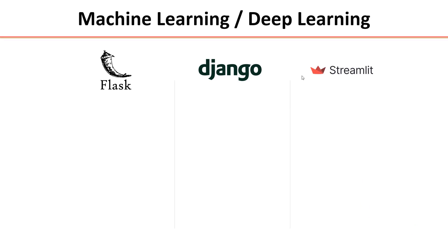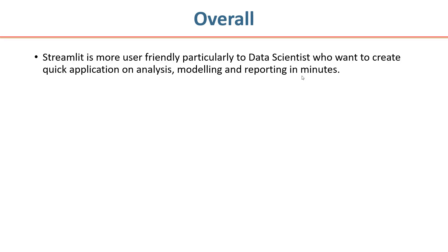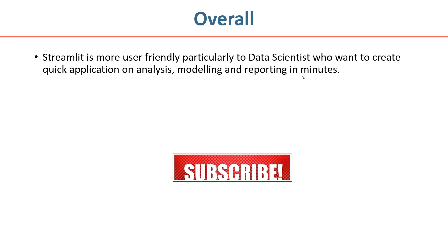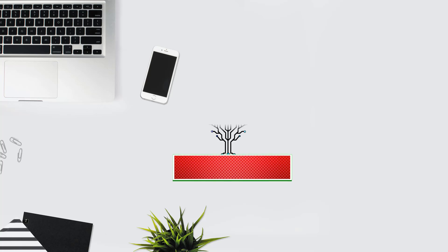Now let's look into the support for machine learning and deep learning models. Flask, Django, and Streamlit all support both machine learning and deep learning models. Overall, Streamlit is one of the most user-friendly frameworks, particularly for data scientists who want to create a quick application for analysis, modeling, and reporting in minutes. That is one of the best things you can have as a data scientist. In the next lesson, we will see more on Streamlit. Until then, happy learning.